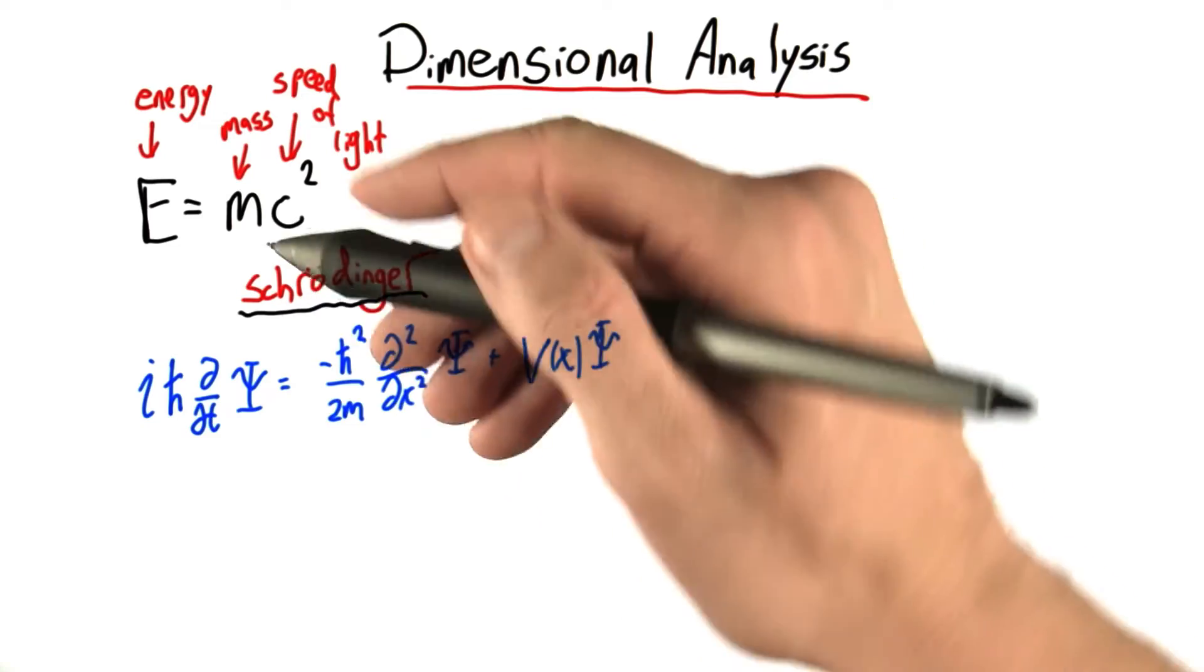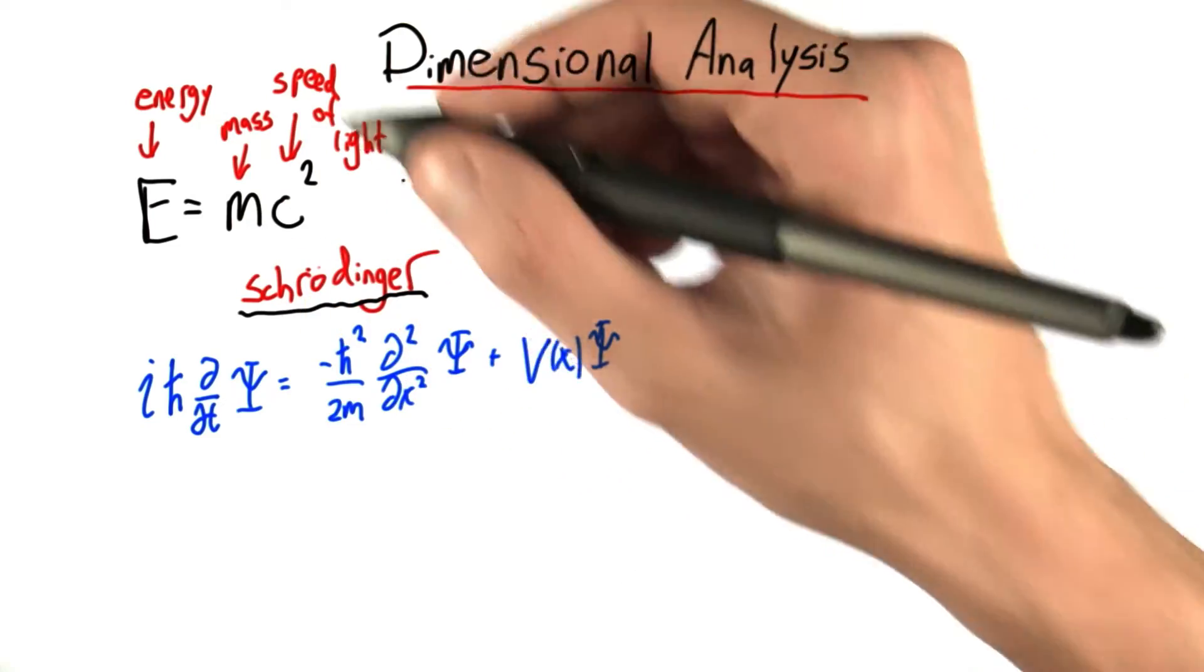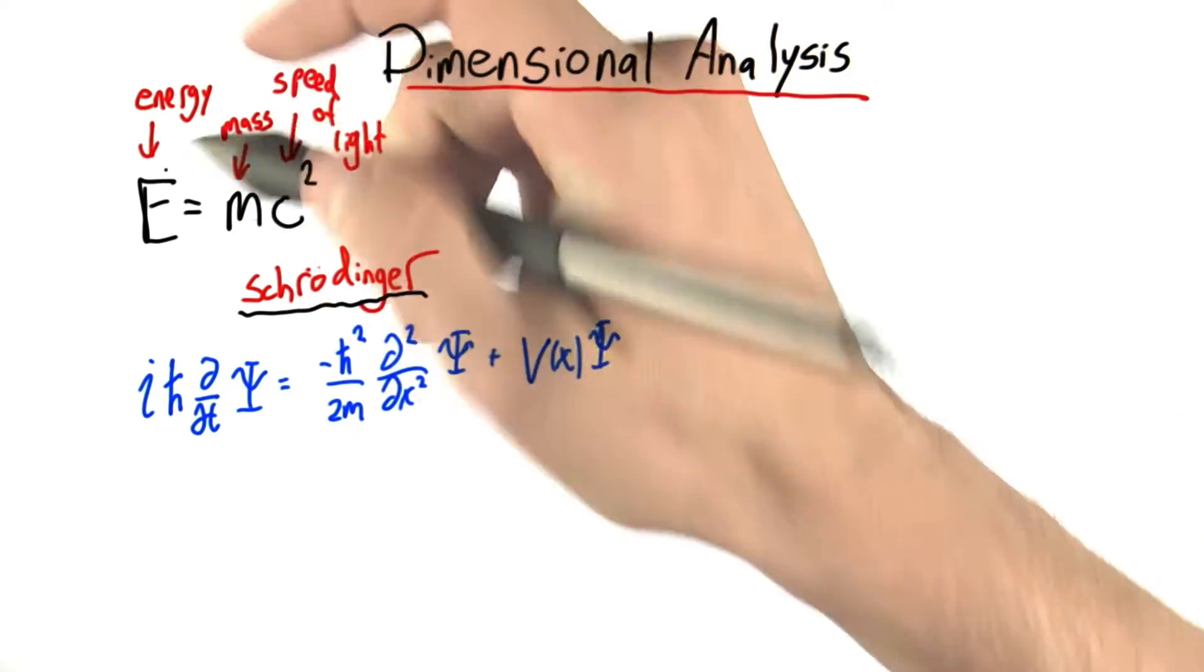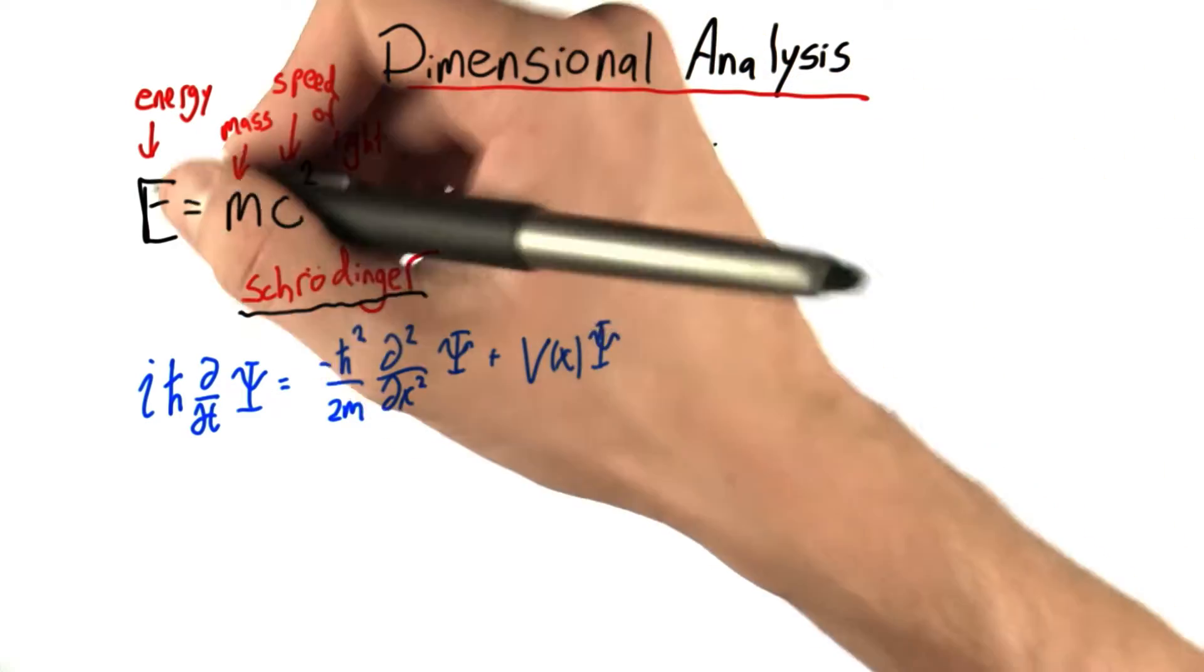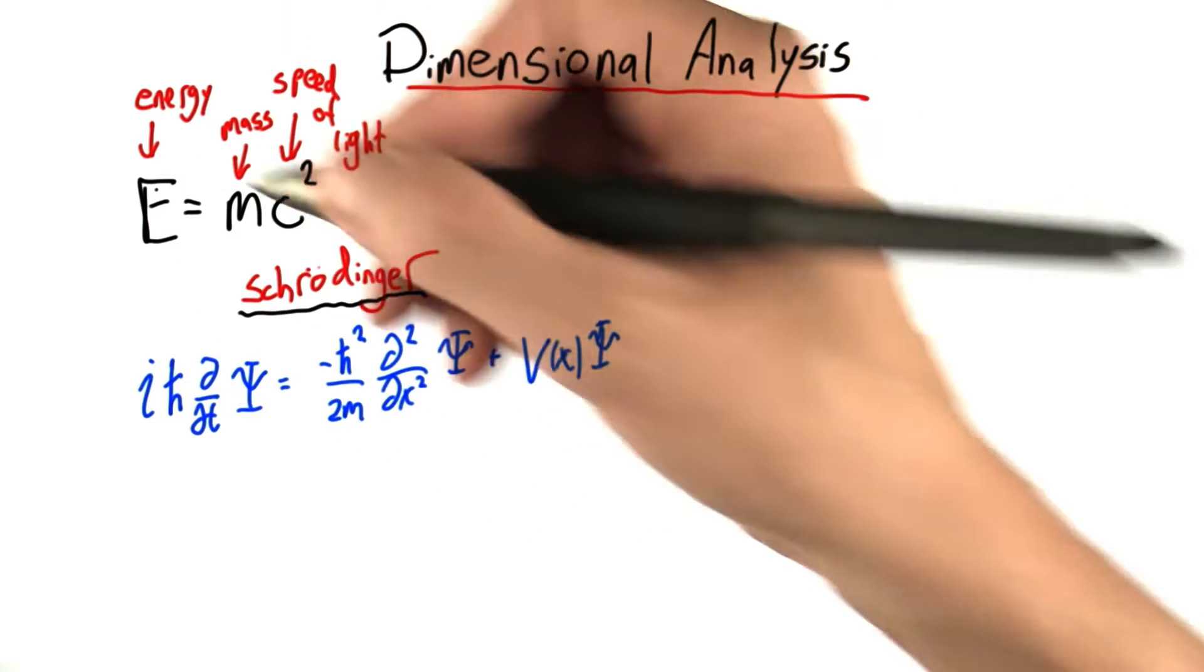Here we have E equals mc squared, one of Einstein's famous equations, which relates mass and energy. Energy isn't something we've talked about in class yet, but with dimensional analysis, you don't need to know what energy is to be able to quantify its units.